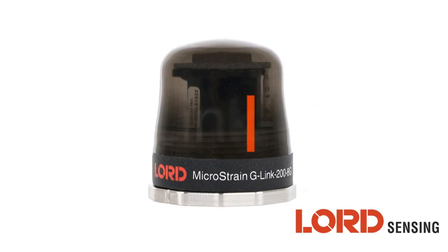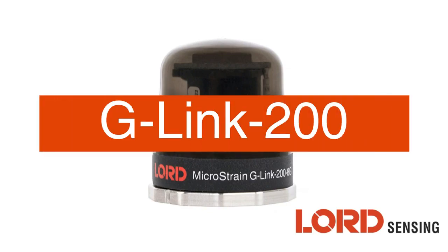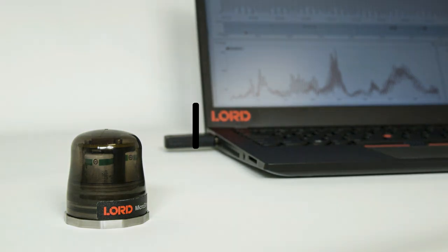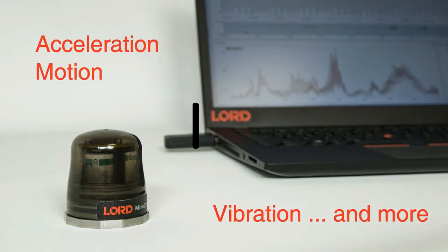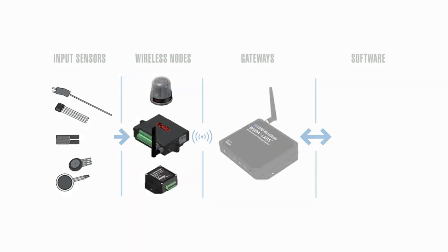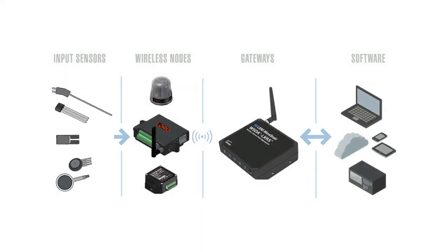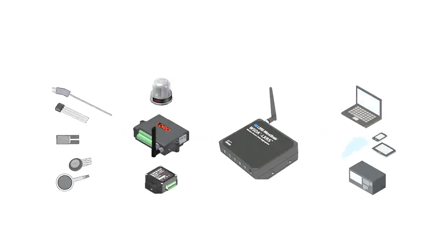This is Lord Sensing's G-Link 200 wireless accelerometer node, engineered to provide accurate, high-resolution measurements of acceleration, motion, vibration and more. It simply integrates with Lord Sensing gateways to provide a total solution in a rugged, compact package.